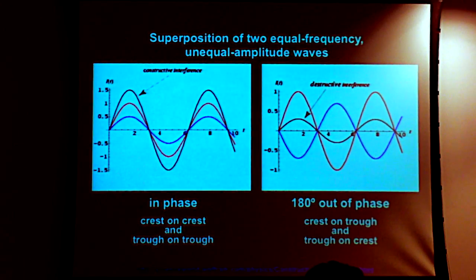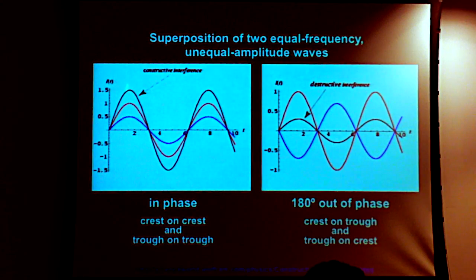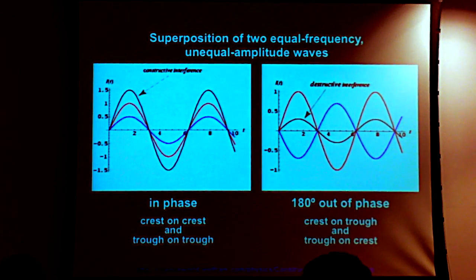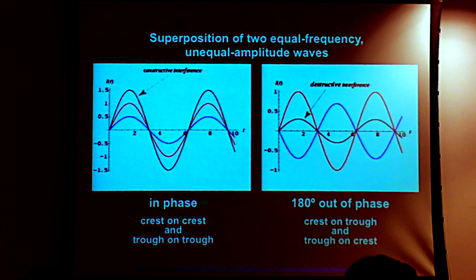We can also have equal-frequency waves with unequal amplitudes — the red and blue waves here. Constructive interference builds the amplitude to the sum of the two amplitudes when perfectly in phase. With destructive interference — when exactly 180 degrees out of phase — we don't get annihilation because the amplitudes differ; we still get destructive interference but not complete cancellation of one wave by the other.